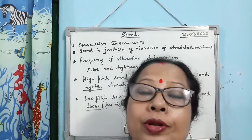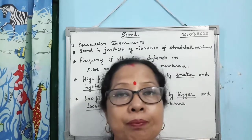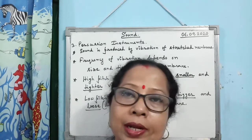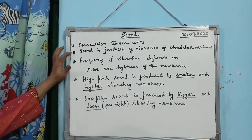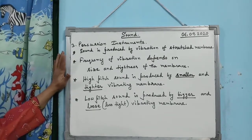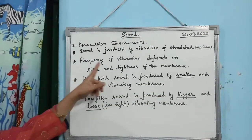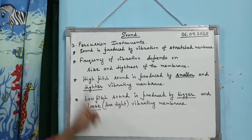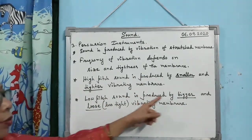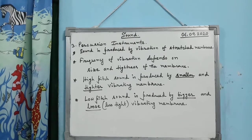How do you produce low pitch sound? You have to use a bigger membrane and a less tight or loose membrane. To summarize the four points: sound is produced by vibration of a stretched membrane; frequency depends on size and tightness; high pitch sound is produced by a smaller and tighter vibrating membrane; and low pitch sound is produced by a bigger and looser vibrating membrane.